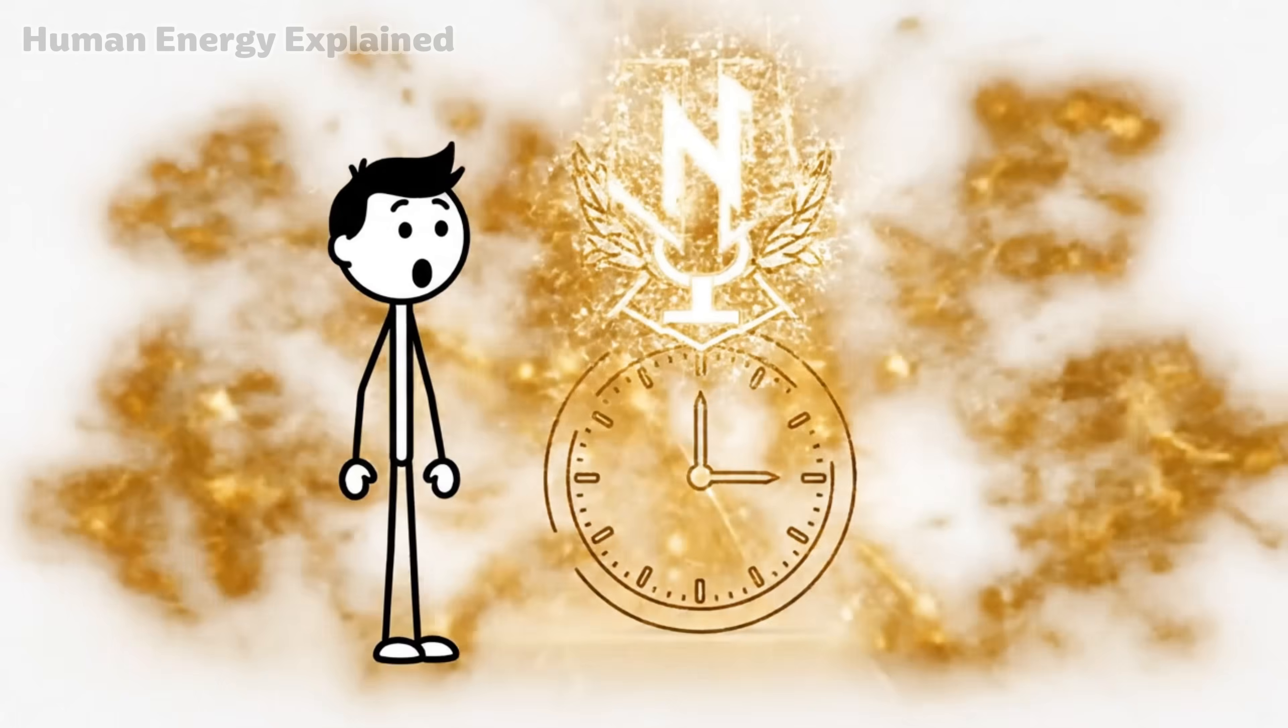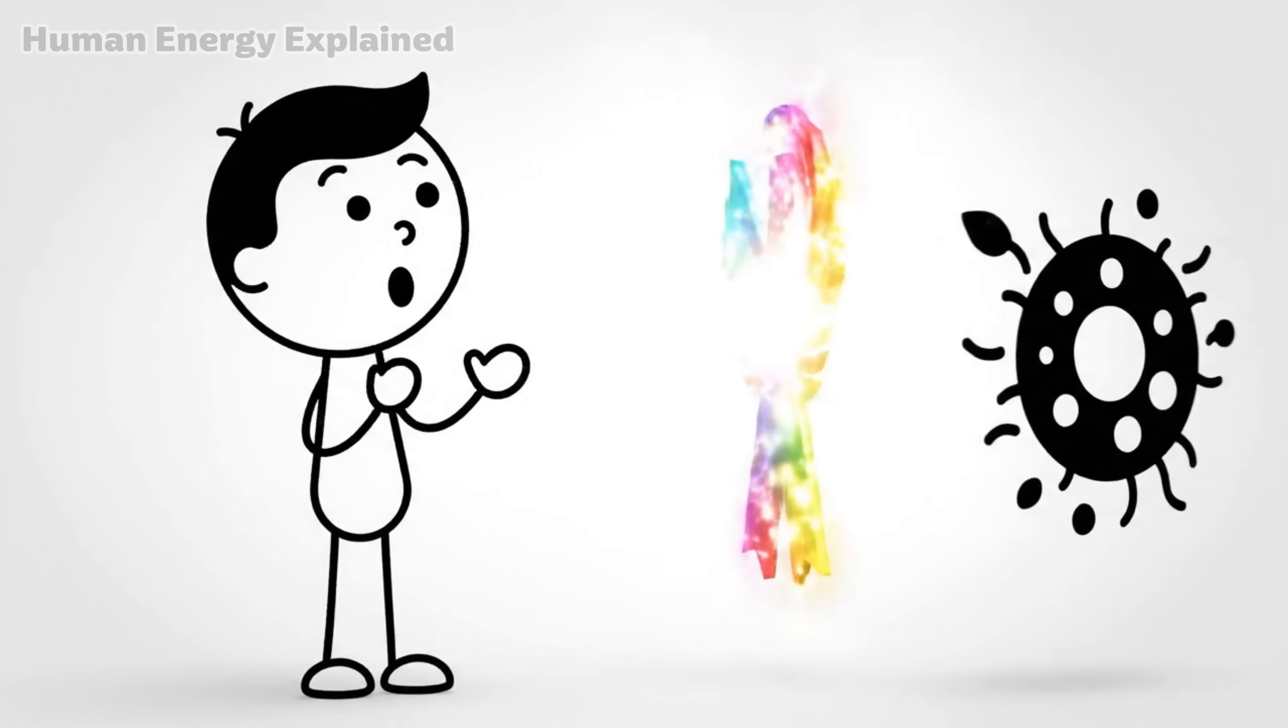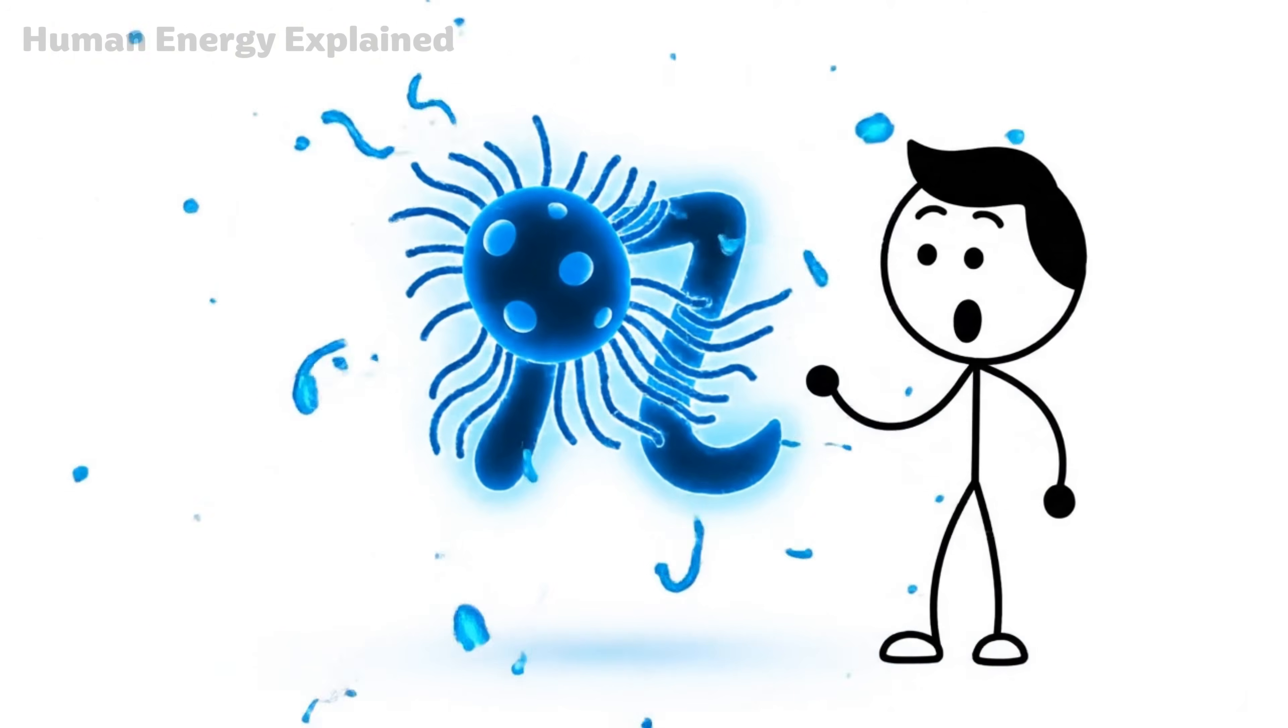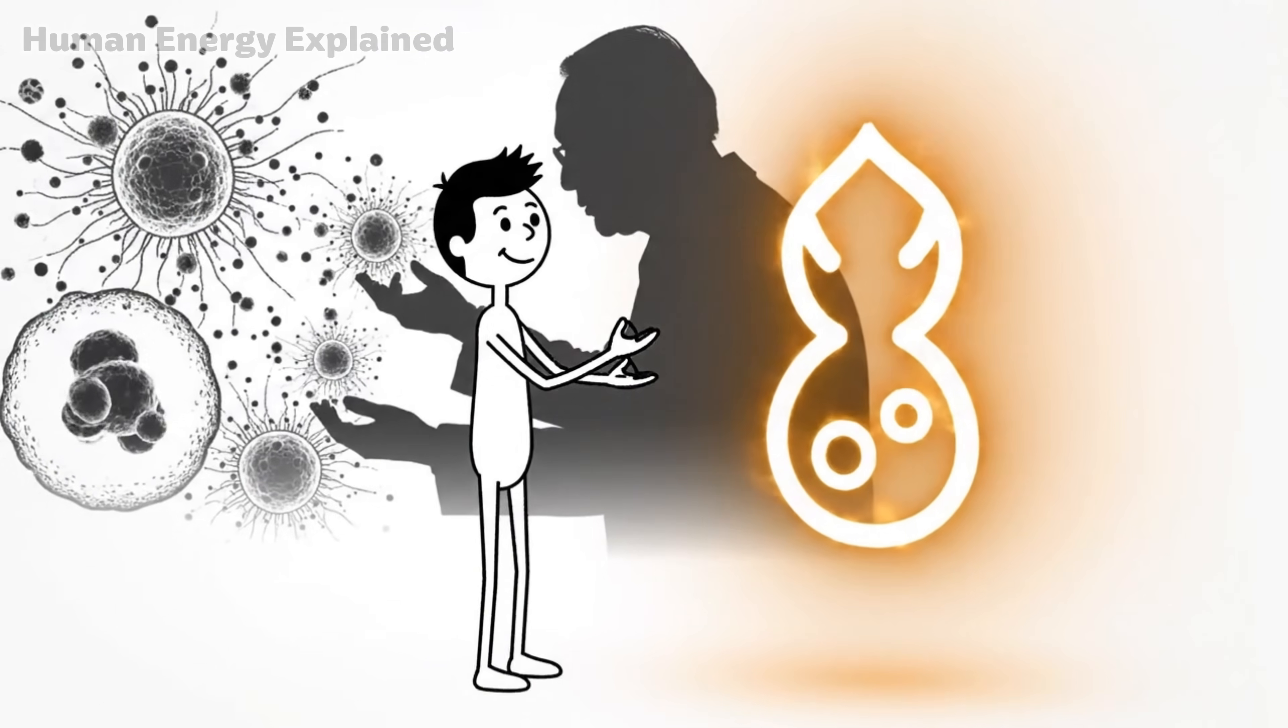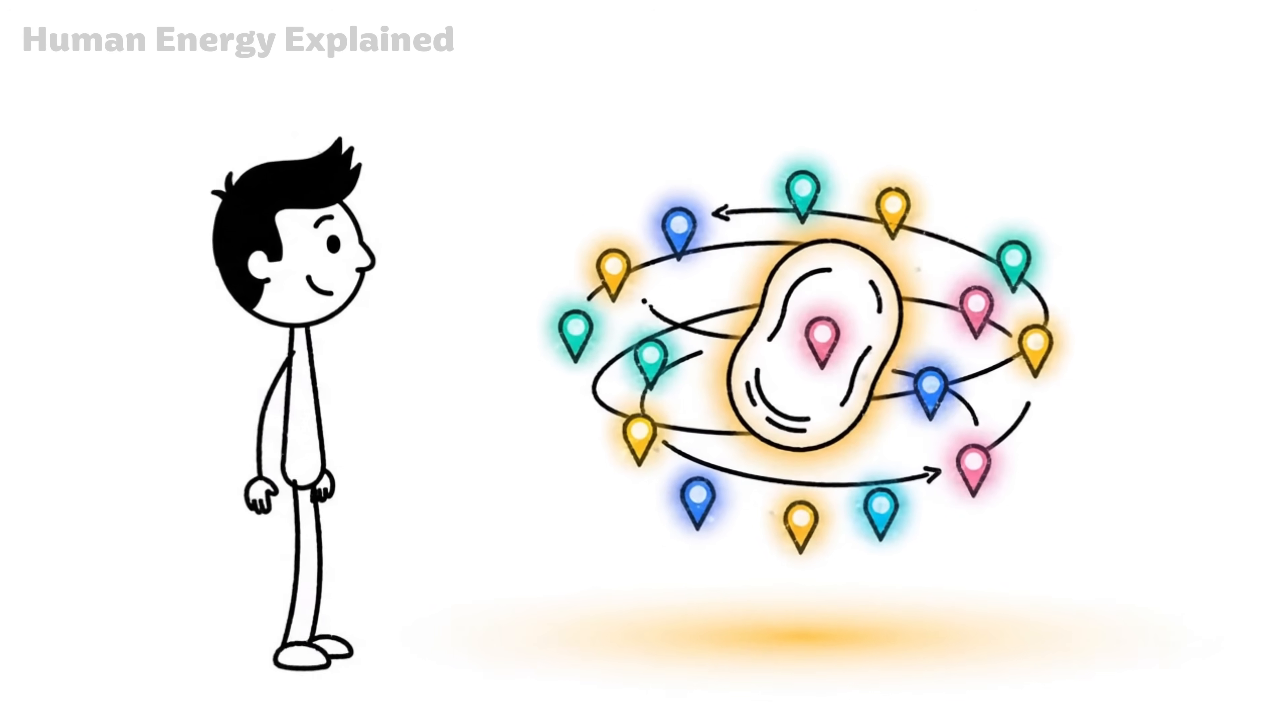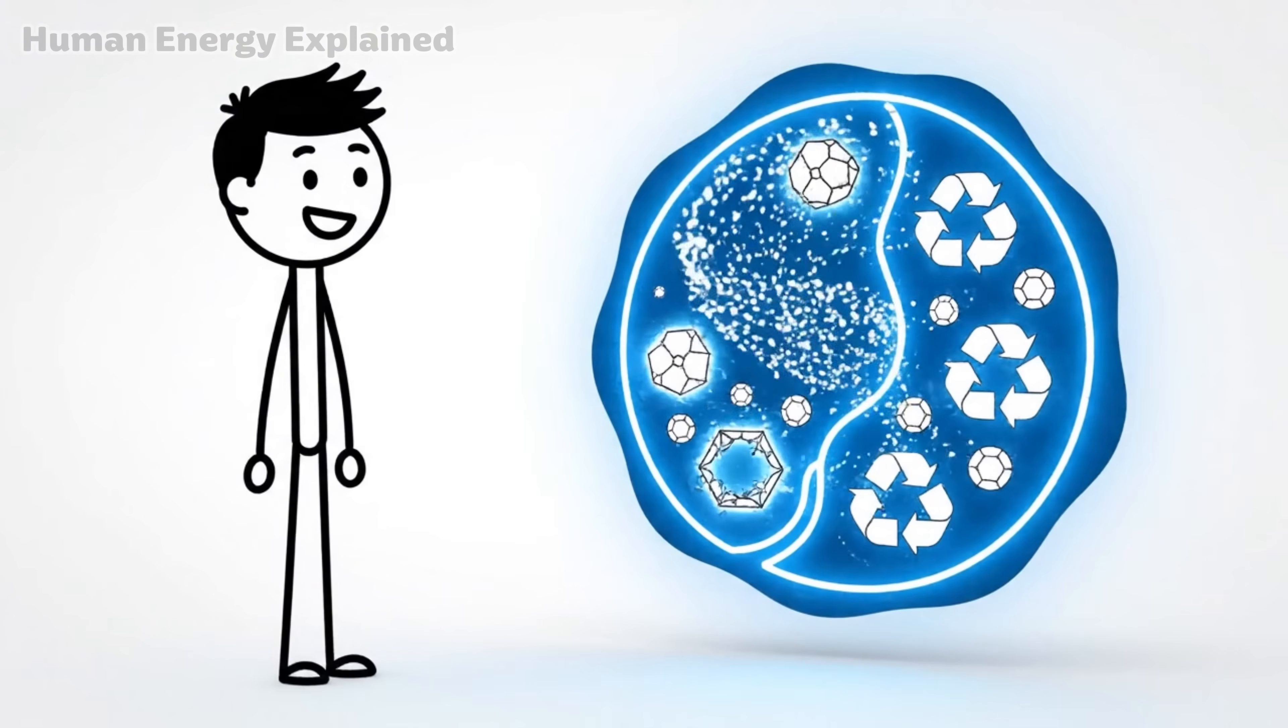And now around hour 24, something Nobel Prize worthy begins. In 2016, Japanese cell biologist Yoshinori Ohsumi won the Nobel Prize in Physiology or Medicine for discovering the mechanisms of a process called autophagy. The word comes from Greek. Auto means self. Phagy means eating. Self-eating. Sounds alarming. But it's actually one of the most elegant survival mechanisms your body possesses. Here's what Ohsumi discovered. Working with simple baker's yeast in the early 1990s, he identified 15 essential genes that control this cellular recycling process. When cells are deprived of nutrients, they don't just sit idle. They activate a sophisticated cleanup system.